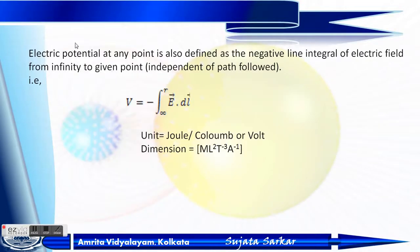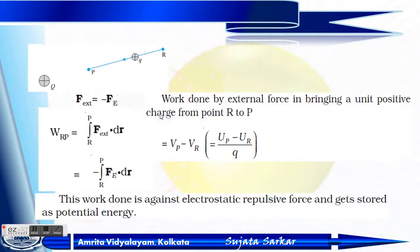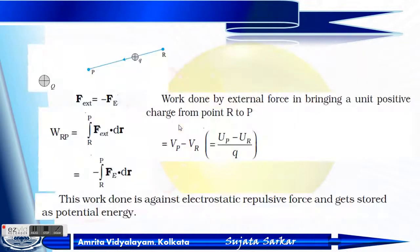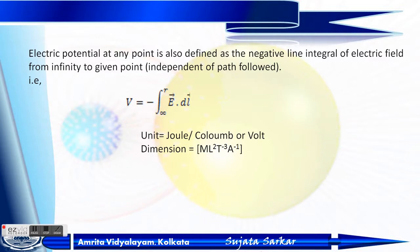The electric potential at any point can also be defined as the negative line integral of the electric field from infinity to the given point. From R to P, or from infinity to R, we can write V equals minus integral from infinity to R of E dot dl. The unit is joule per coulomb or volt, and the dimension is ML²T⁻³A⁻¹.